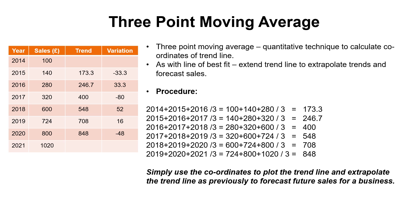If you're given data from 2014 to 2021, to calculate the trend you simply add up the first three sales data figures and divide by three, then you move on to the next year. It's a relatively straightforward arithmetical exercise — just working out a simple average — and that provides you with the coordinates for the trend line.